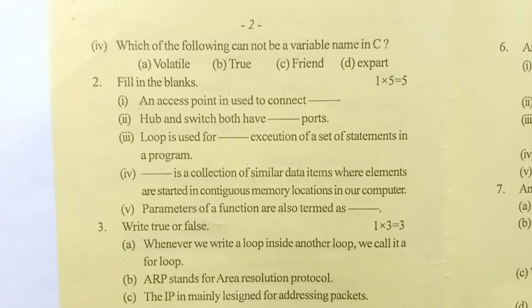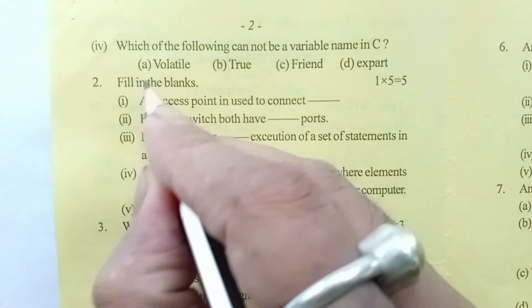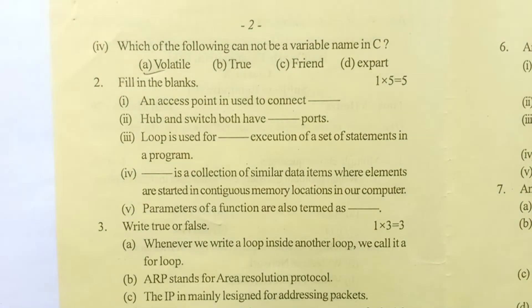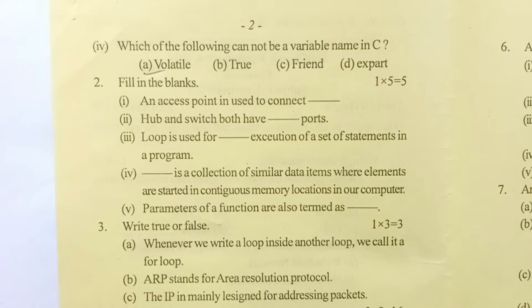Question number five: which of the following cannot be a variable name in C? The correct answer will be option A. Question number two: fill in the blanks. Question number one: an access point is used to connect. Answer will be wireless network.